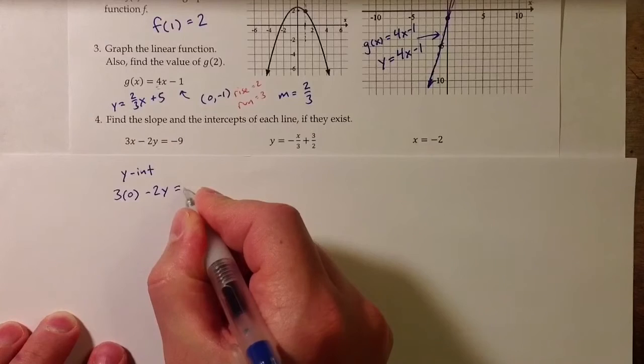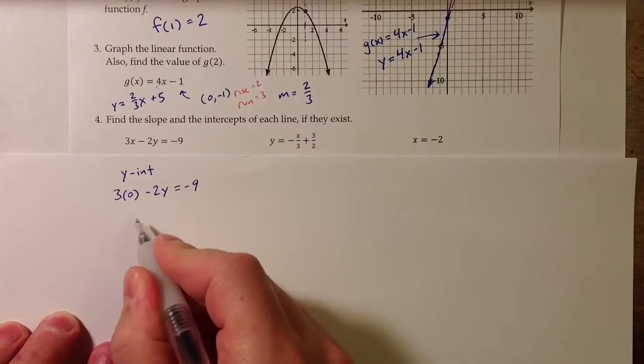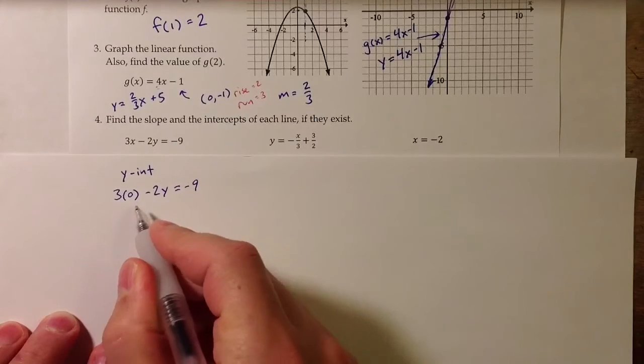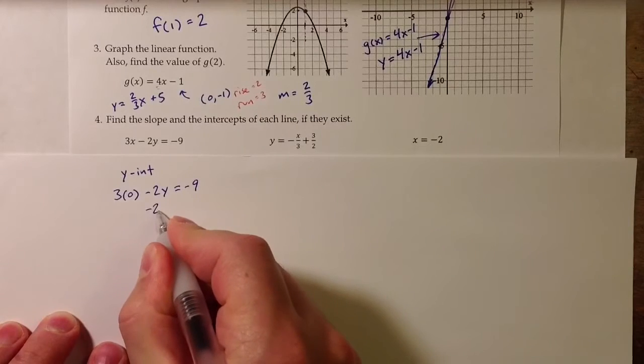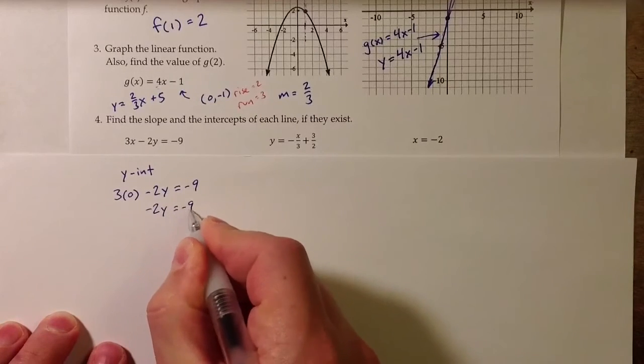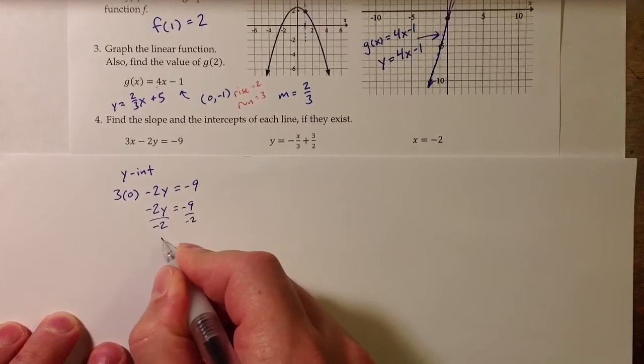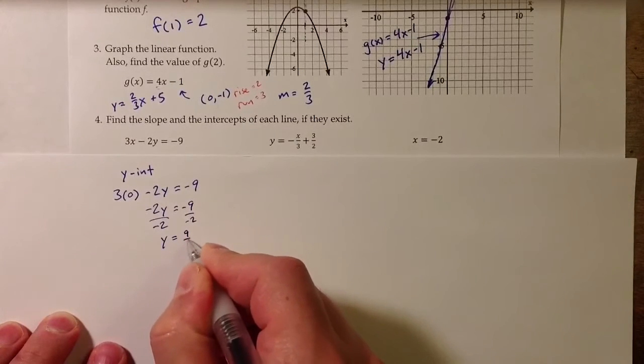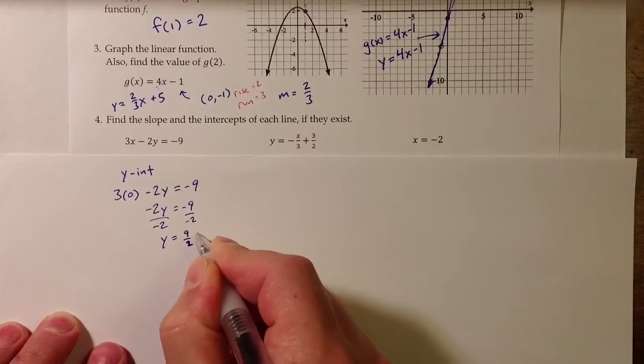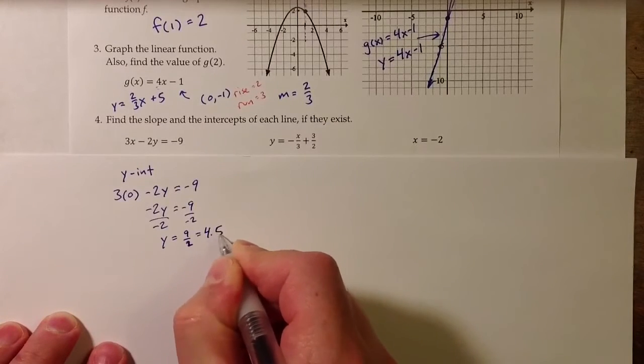If I plug in 0 for x and then solve for y, 3 times 0 is 0, so we're left with negative 2y equals negative 9, which means dividing both sides by negative 2, we get that y equals 9 over 2, or as a decimal 4.5.